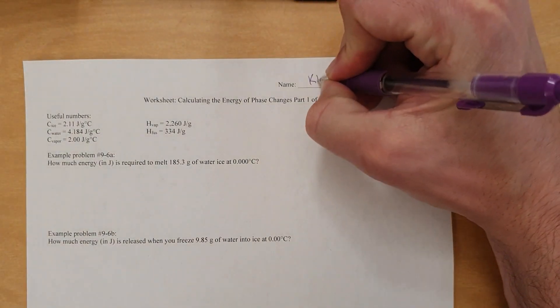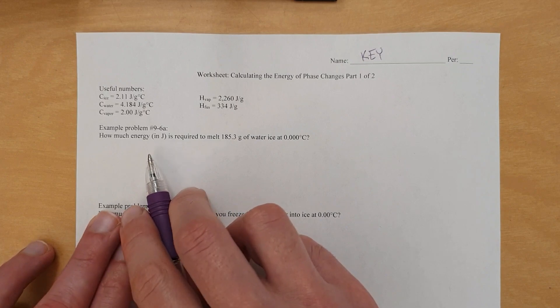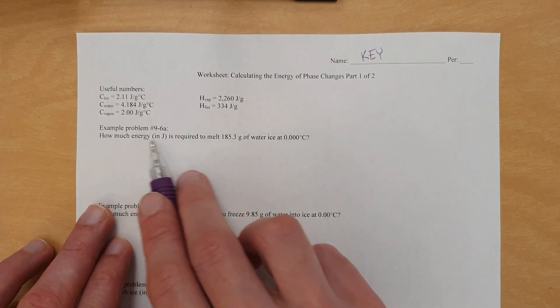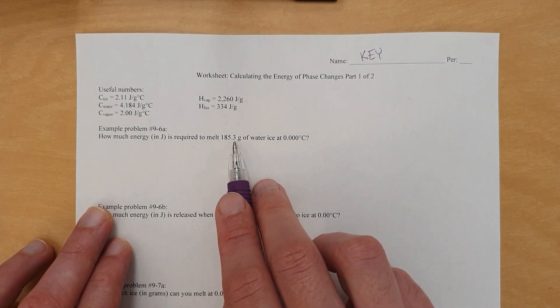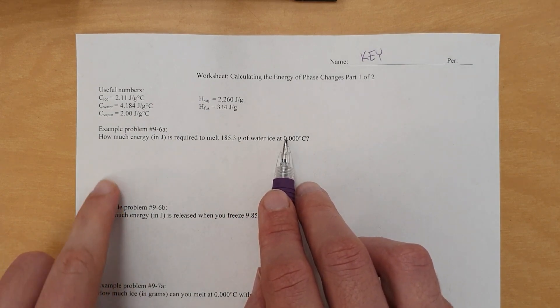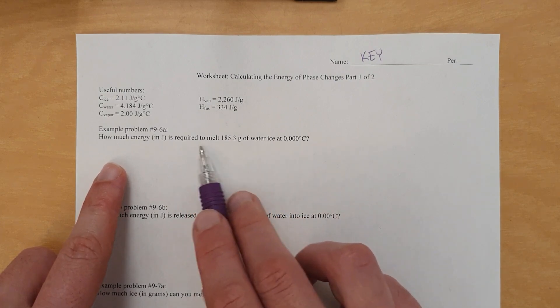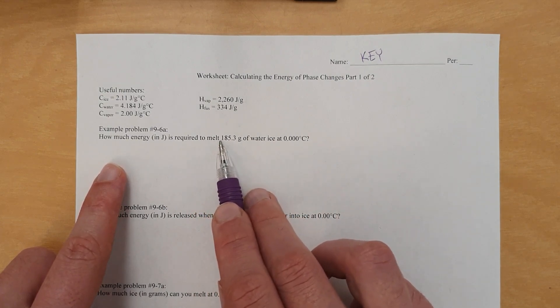Let's go through a few examples of how you do this. It's not going to go through every question, but we can do a few representative ones. Alright, this one. How much energy in joules is required to melt 185.3 grams of water ice at temperature zero degrees Celsius?